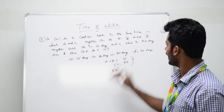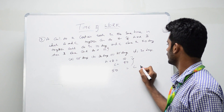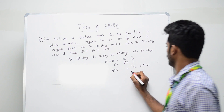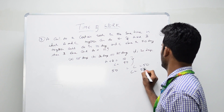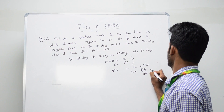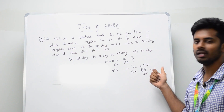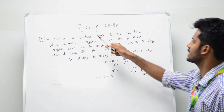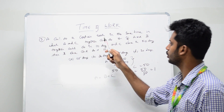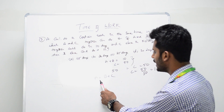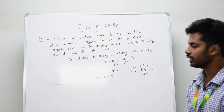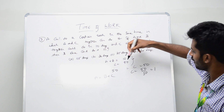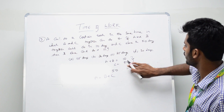C alone can do the work in 50 days, so C does 50 divided by 50, which is 1 unit per day. The question states that A can do the work in the same time as B and C together, meaning A equals B plus C. We already know C equals 1 unit per day.